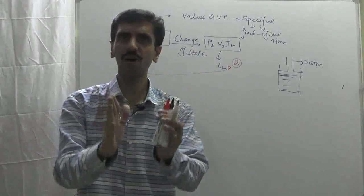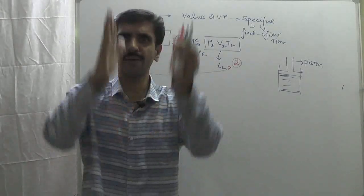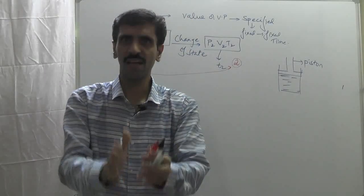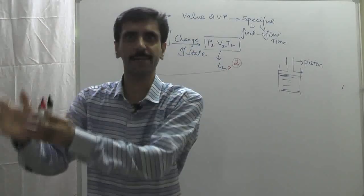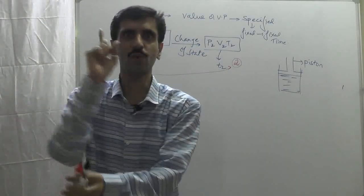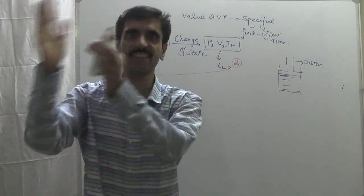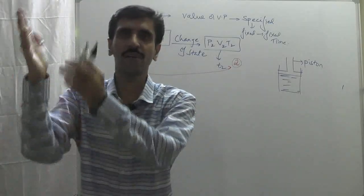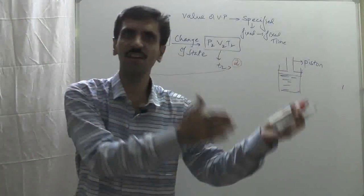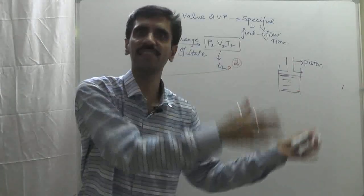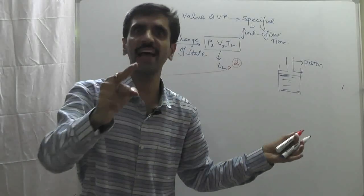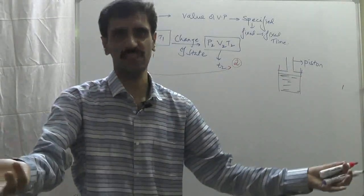So when the value of the variable property is fixed at a fixed time, with one specified value, that is a state. When the time changes and the value also changes, that is called a change of state.